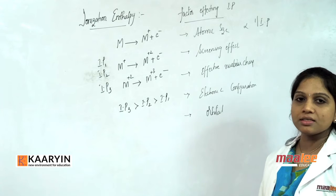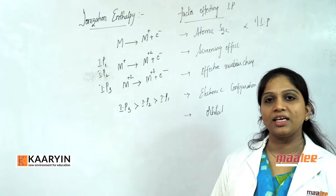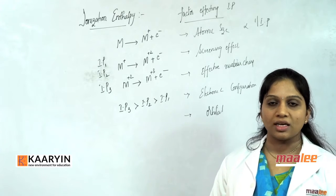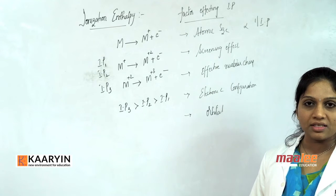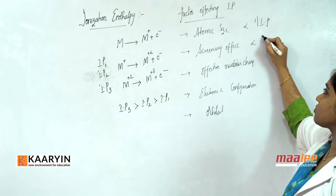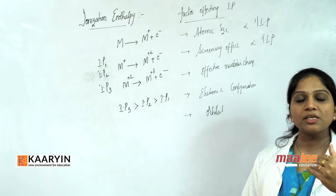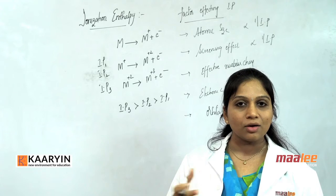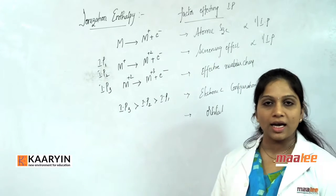The second factor is screening effect — the repulsions between the inner electrons and the outermost electrons. As atomic size increases, these repulsions increase, making it easier to remove the electron. So if the screening effect is more, the IP values will be less. Screening effect is also inversely proportional to ionization potential. As repulsions between inner and outer electrons increase, electrons can be extracted from the outermost orbit with minimum energy.